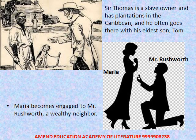Sir Thomas is a slave owner and has sugar plantations in the Caribbean. He often goes there with his eldest son Tom. During most of the novel, Sir Thomas has gone for an extended period of time to deal with problems at his plantations, and most of the major events of the novel take place in his absence.